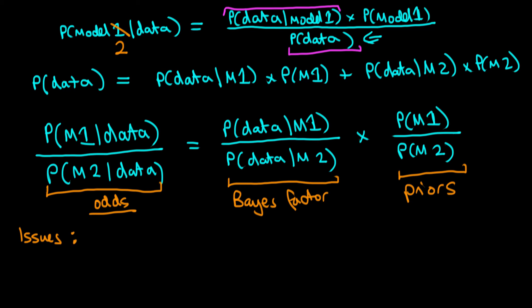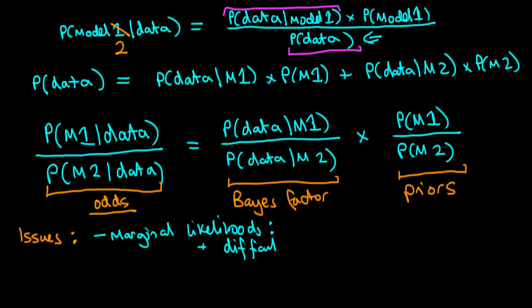One of the main sources of difficulty is in calculation — explicitly to do with the fact that we need to calculate marginal likelihoods. Marginal likelihoods are inherently difficult to calculate, and that difficulty comes from having to do a very highly multi-dimensional integral or multi-dimensional sum. But also because of the way in which the two terms being integrated interact with one another, that integral is especially difficult and pathological.